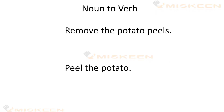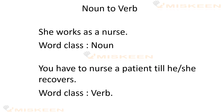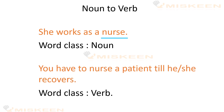Noun to verb: Remove the potato peels — yaani aalu ke chhilke nikaaliye, yehaan 'peels' ek noun hai. Peel the potato — yehaan 'peel' ek verb ka kaam kar raha hai, yaani aalu ko chhiliye. She works as a nurse — yehaan 'nurse' ek noun hai yaani ek pesha. You have to nurse a patient till he or she recovers — yehaan 'nurse' ek verb ki tarah hai, matlab kisi ki dekhbhal karna taaki woh theek ho jaye.